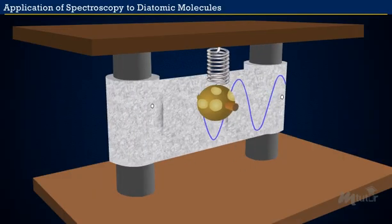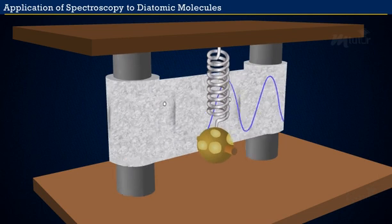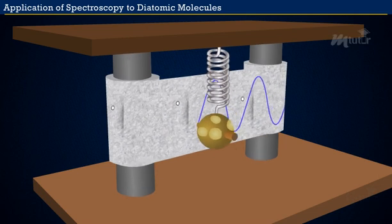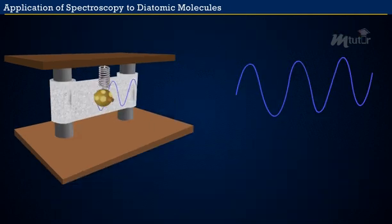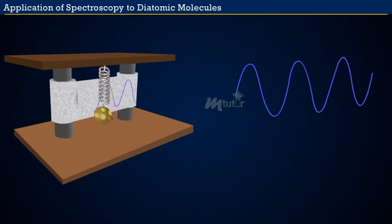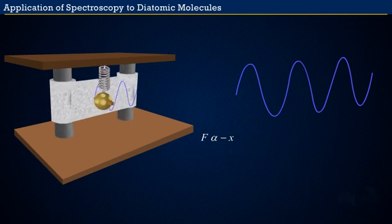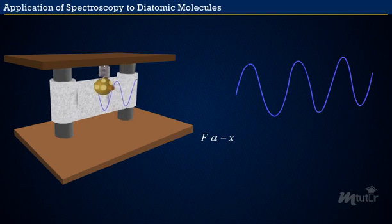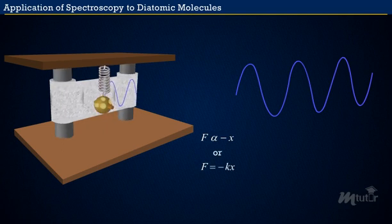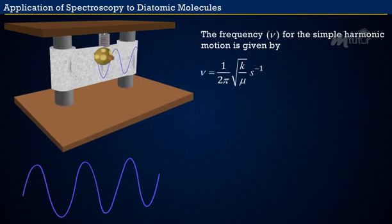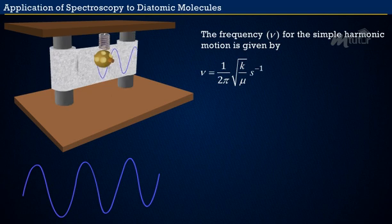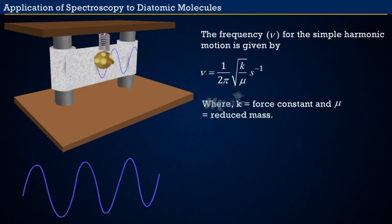The vibrational energy level of a diatomic molecule is modeled as a harmonic oscillator depending on a force constant and the molecule's effective mass. Observing the typical potential energy curve of a diatomic molecule, force is directly proportional to minus x, where x is the interatomic distance. The frequency nu for simple harmonic motion is given by: nu equals 1 over 2 pi times the square root of force constant k divided by reduced mass mu, in units of inverse seconds.